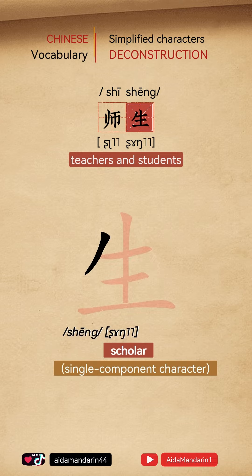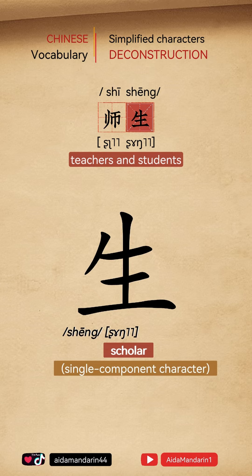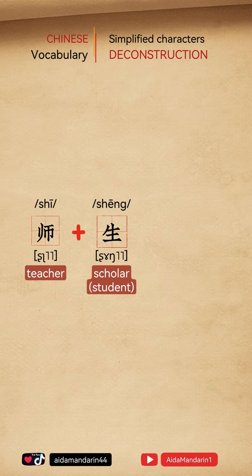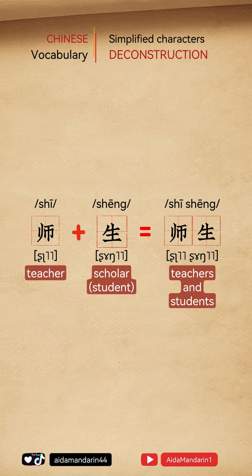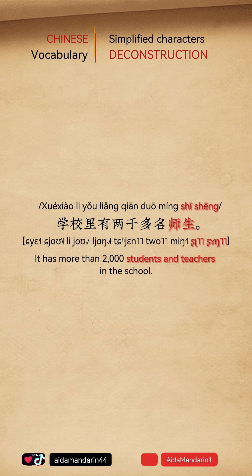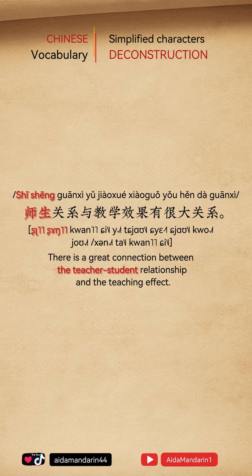生 (shēng) means scholar or student — it is a single component character. 师 means teacher, 生 means scholar or student, and 师生 means teachers and students. For example: the school has more than two thousand students and teachers. 师生关系与教师效果有很大关系 — there is a great connection between the teacher-student relationship and the teaching effect.